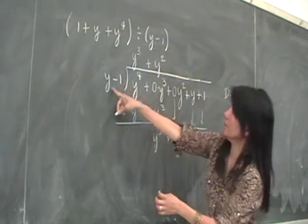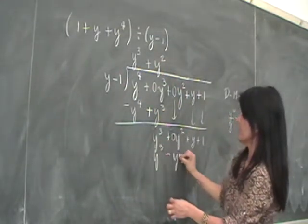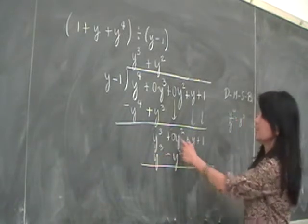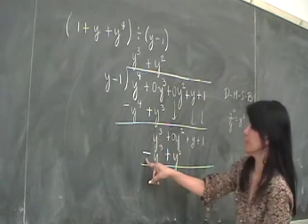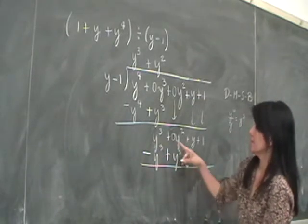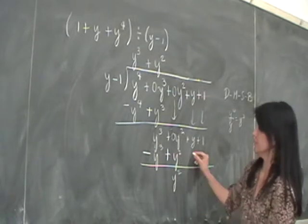Then you multiply y squared to this, so you'll have y cubed minus y squared, right? See how you needed the y squared, right? And then you change the sign so that it will become minus plus, right? 0 plus 1 is again what? Y squared. 1y squared. Bring down everybody.